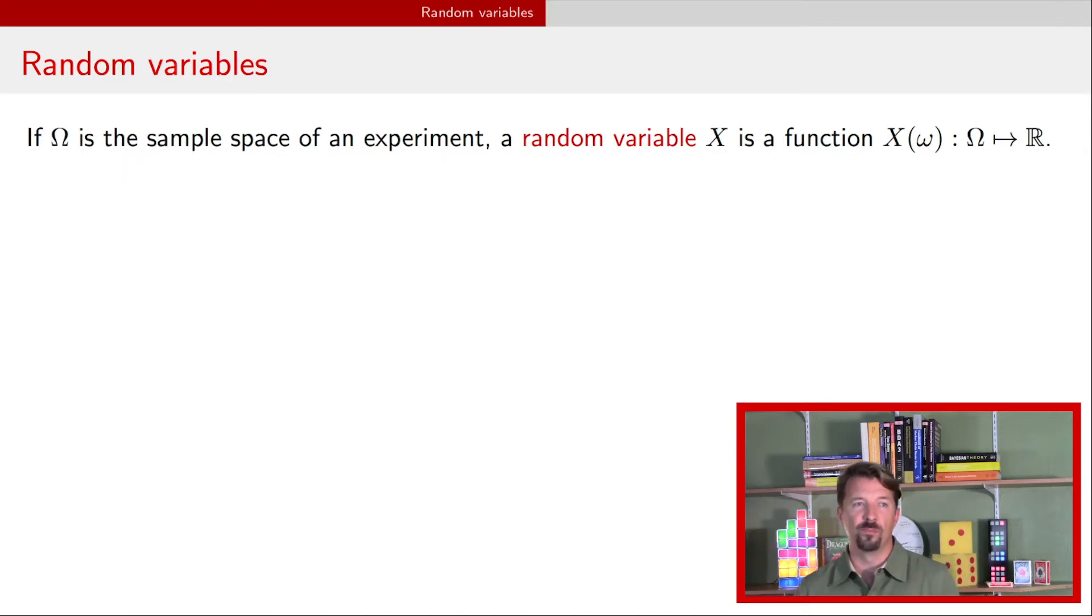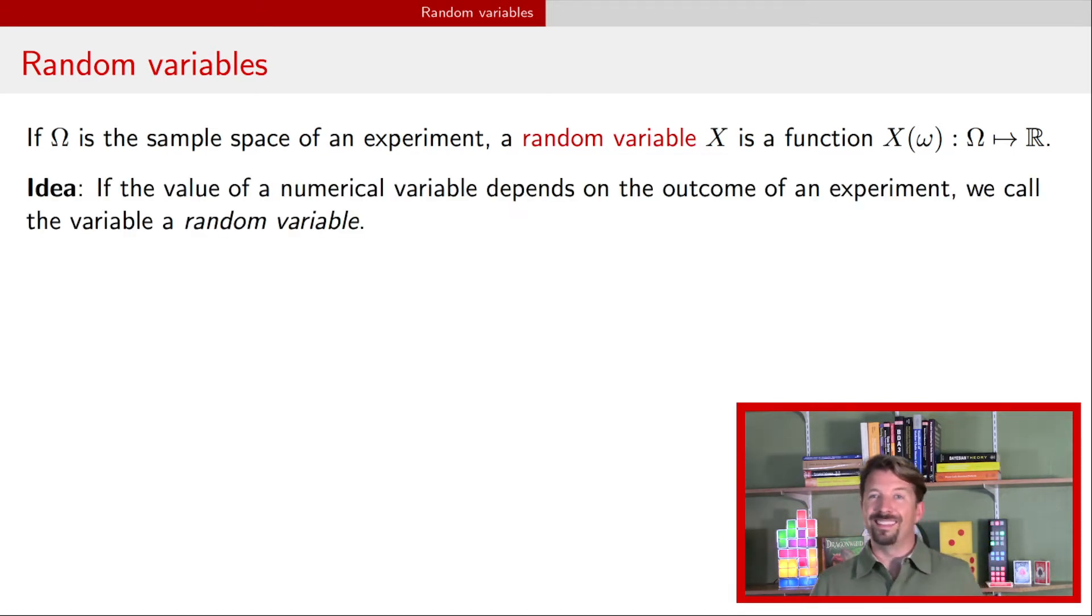A random variable is just a function of an experiment. Formally, if we have an experiment, we have some output omega in a sample space capital omega and X, a random variable, just takes whatever outcome we observed, that's the little omega, and converts it into a real number. All that fancy notation on the slide is saying we just take an experiment and turn it into a real number. And it's random because we don't know the outcome of the experiment before it occurs, and therefore what number we will see is also random.